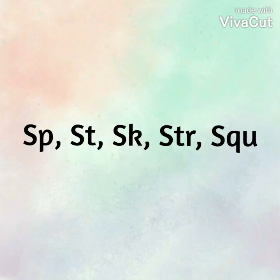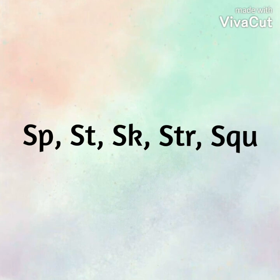In this lesson we have created consonant blends by adding different letters — L and R. The letters SP, ST, SK, STR, and SQU are also consonant blends.